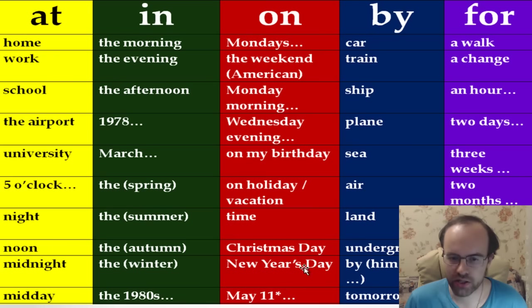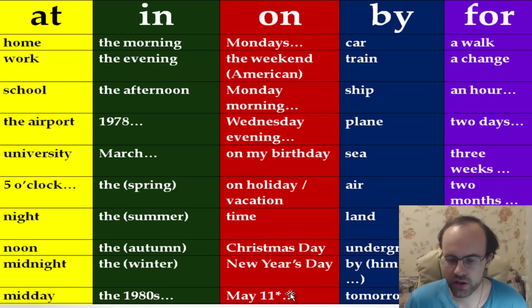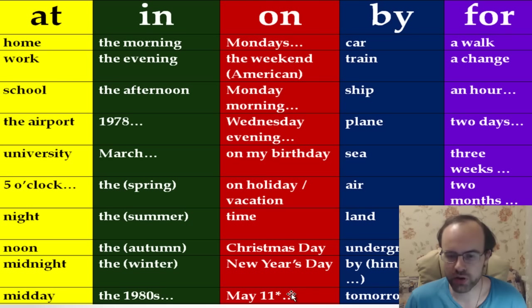We use 'on' with dates — for example, on the 11th of May, on the 12th of May, on the 13th of May. Many students mispronounce dates, so practice them carefully. For example: I was born on the 26th of April. Don't forget the 'of'. I was born on the 1st of December, on the 2nd of February, on the 11th of July, on the 25th of August.